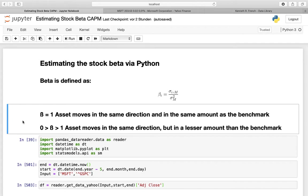A beta greater than 0 but less than 1 means that the asset moves in the same direction but in a lesser amount than the benchmark. So for example S&P 500 rises by 1% and Microsoft is rising by 0.9%. That is also true for negative values. So a beta of minus 1 is that the asset moves in the opposite direction and in the same amount as the benchmark. And of course this is also possible for values between minus 1 and 0.